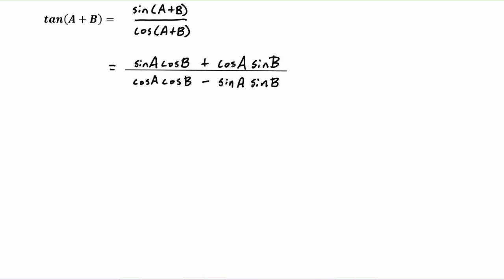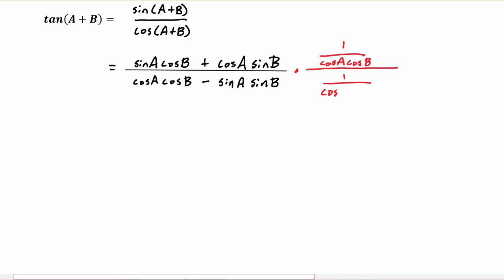What mathematicians were seeking when they worked on this proof was, since this is a tangent, they wanted to get the identity to be in terms of tangent. So what they did was multiply by one in the form of one over cosine a cosine b, over itself. Please note that this is just a fancy version of one — all we're doing is multiplying by one.